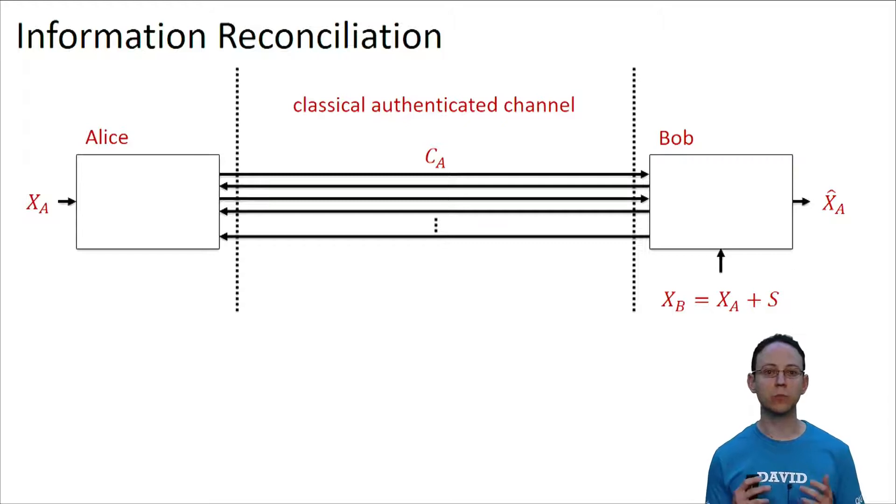An information reconciliation protocol consists simply in the exchange of messages over this channel, such that Bob can recover xa, that is, the string of Alice. We denote by ca the string consisting of all the messages exchanged over the classical channel. Finally, Bob, with the help of xb and ca, will output xa hat, that is, an estimate of the string of Alice xa.